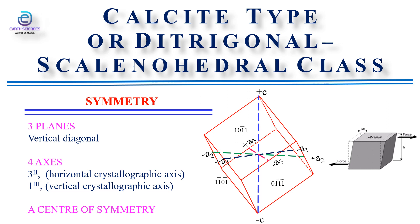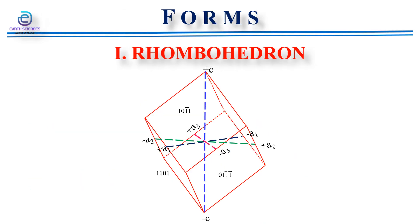The three horizontal axes represent the twofold axis of symmetry. Because the faces of this rhombohedron occur in pairs on opposite sides of a central point, it also possesses a center of symmetry. Now we will study the forms present in the calcite class. The very first form is the rhombohedron.